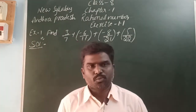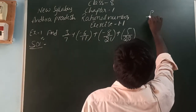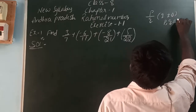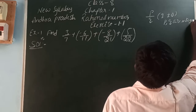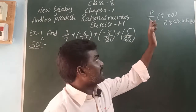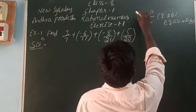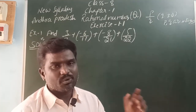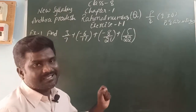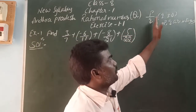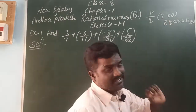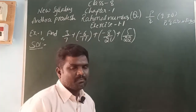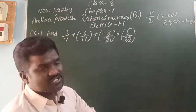A number which is in the form of P by Q, where Q is not equal to 0, and P and Q are integers — these numbers are called Rational Numbers. Rational Numbers are denoted by capital Q. Capital Q means a number which is divided by another number to get the quotient. If Q is equal to 0, it is not defined — any number divided by 0 is undefined. So this is the definition of Rational Number.